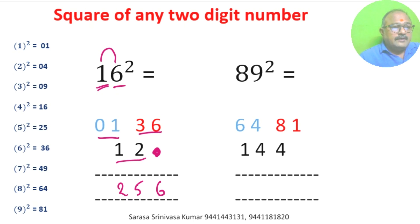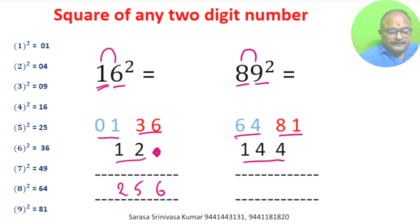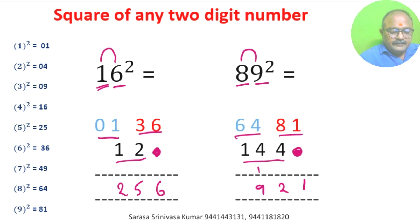89 square: square of 8 is 64, square of 9 is 81. 9 times 8 is 72, double it — 72 into 2 is 144. We don't write anything in units place. 8 plus 1 is 7 (with carry). Square of 89 is 7921.